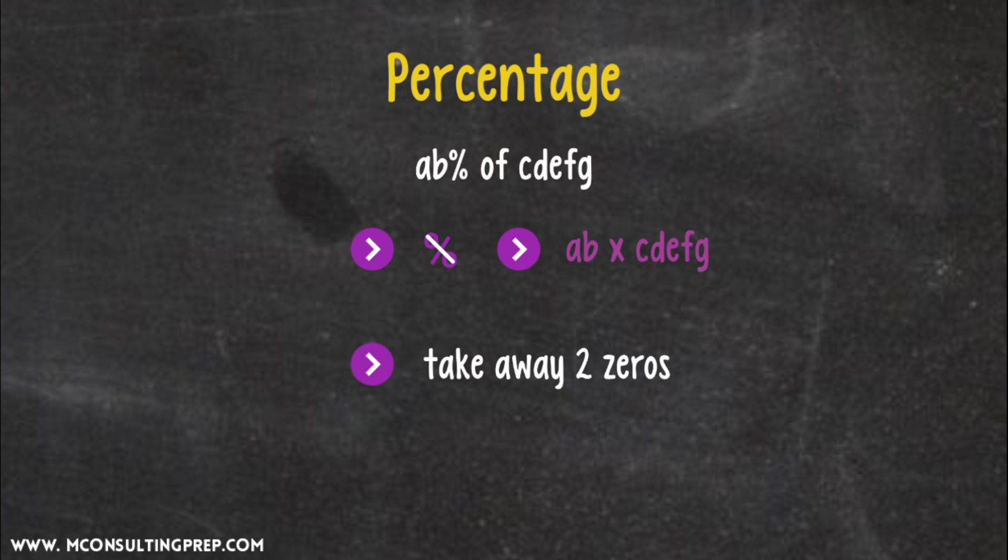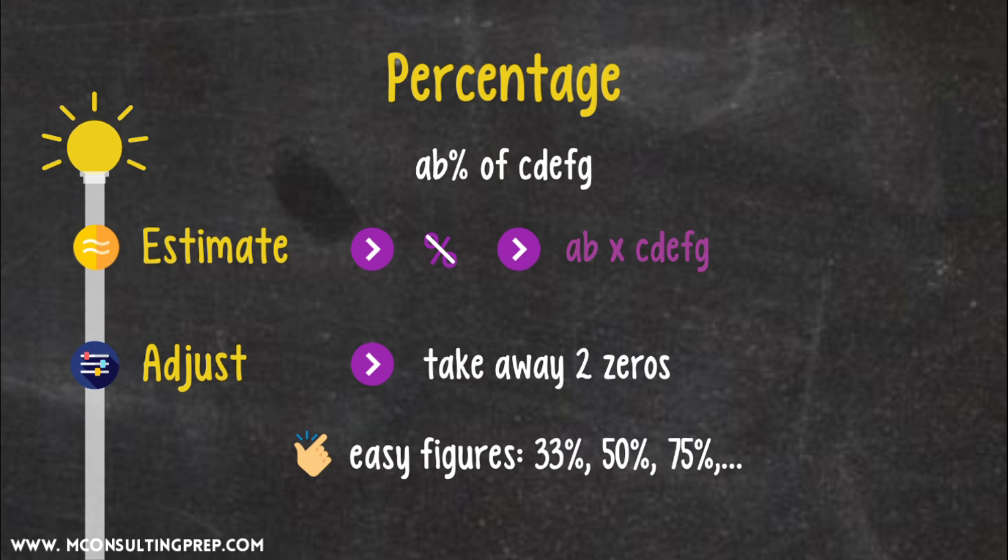It's last but certainly not least. With the computation AB% of CDEFG, simply you just need to ignore percent, turn it into multiplication of AB times CDEFG, then take away two zeros. Sounds easy, huh? Sometimes when you're lucky, the percentage is already close to some easy figure like 33%, 50%, or 75%. You can deploy even more shortcuts to cut the time and don't need to do the multiplication and divide 100 like above. However, the approach still goes through two stages, estimation and adjustment.